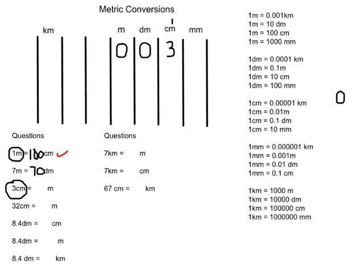We need to get to meters, so we fill in two zeros moving left. Since centimeters is a smaller unit than meters, the number for meters actually needs to get smaller. Since meters are a bigger unit, we need to add a decimal. Starting at 3 in the centimeters column, we're moving decimal places between columns. We put zeros in, add our decimal, and get an answer of 0.03 meters.